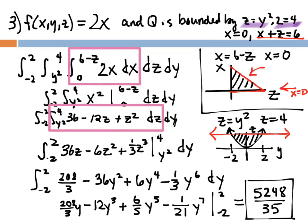Example 3 uses f(x, y, z) = 2x, and Q is bounded by z = y², z = 4, x = 0, and x + z = 6. We need to choose where to start. Since x + z = 6 gives x as a function of z (x = 6 - z), I elected to take the innermost integral with respect to x, drawing z on the horizontal axis and x on the vertical to see which is larger.